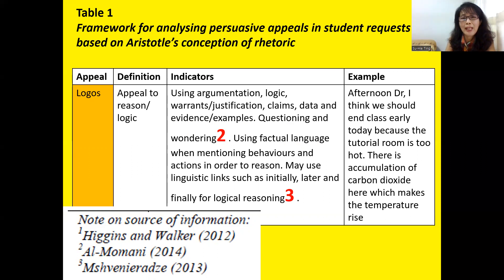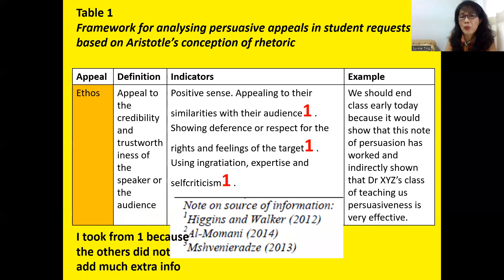When I formed the analysis framework for logos, I took it from two sources. This one is easier, as people are clearer about it, so I didn't have to add my own definitions. If I see factual language, I will code it as logos. They may also use linguistic connectors such as 'initially,' 'later,' and so on for logical reasoning. For ethos, I took it only from Higgins and Walker 2012, because the others did not have much information on ethos — appeal to credibility and trustworthiness of the speaker.